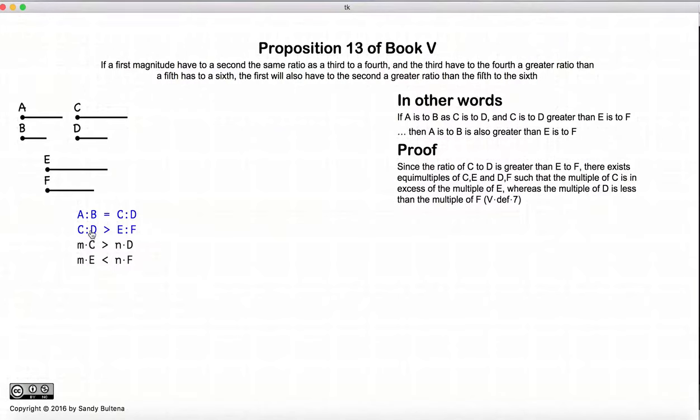Now, because c to d is greater than e to f, then there exist two numbers, two integers, such that if c and e have equal multiples and d and f have equal multiples, then m times c would be greater than n times d, and m times e would be less than n times f.